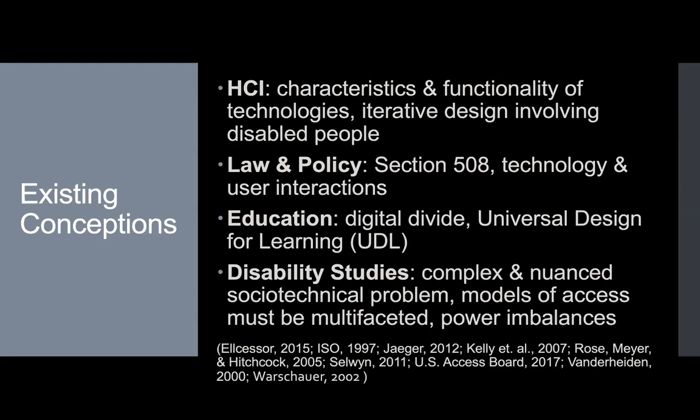From the conceptions of access to technology that can be found in the field of disability studies, three prominent themes arise. First, access to technology is a complex and nuanced socio-technical problem that cannot be explained by streamlined linear models. Second, and connected to the first idea, models of access to technology must be multifaceted, comprised of many components in order to address the technical, social, and physical aspects of access. Third, foregrounded in all discussions of access to technology in the field are the concepts of power imbalances and the lived experience of disabled people.